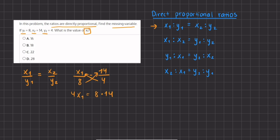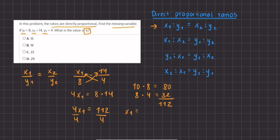So we have 4x1 equal to 8 times 14. To solve this multiplication, you can do 10 times 8, which is 80, and 8 times 4, which is 32. Adding them together gives 112 — that's what 8 times 14 equals. To find x1, we divide by 4 on both sides, giving us x1 equal to 112 divided by 4, which is 28. That's the value of x1 using the first formula, and that's answer D.